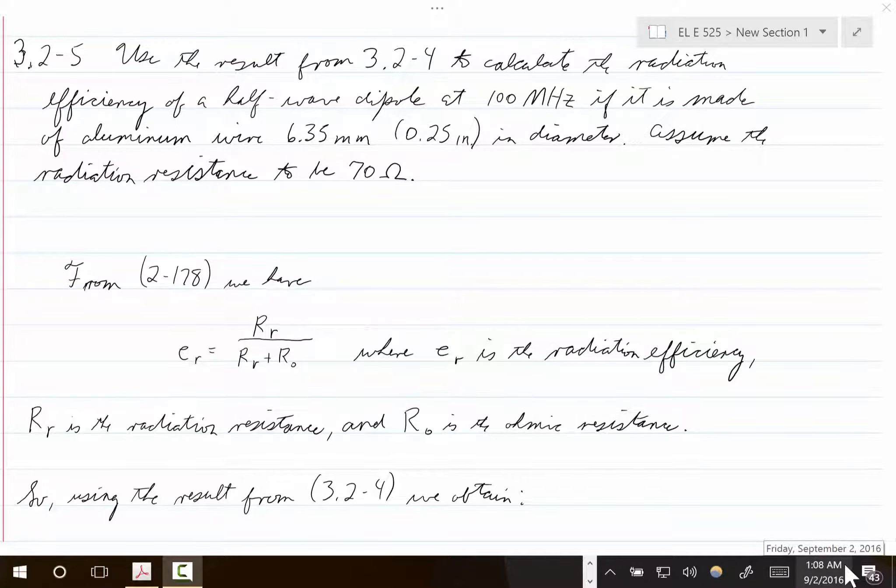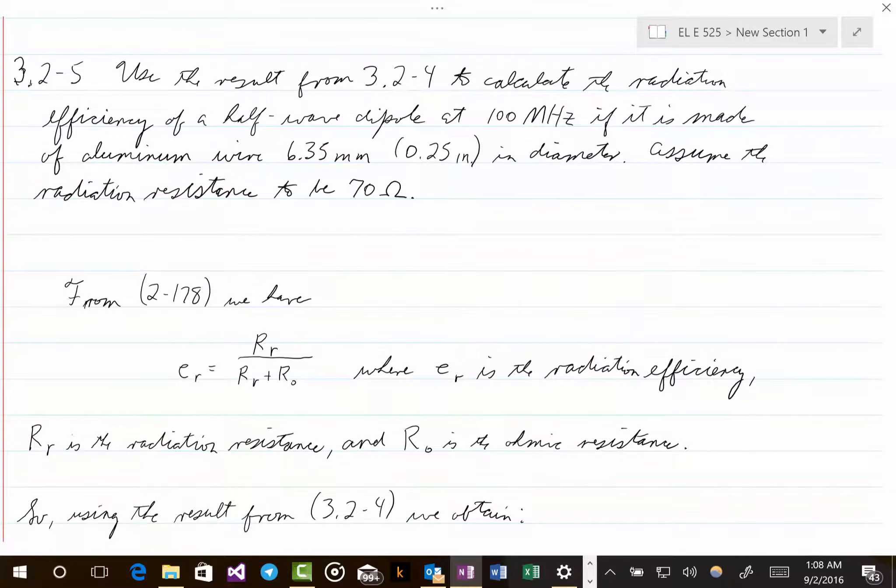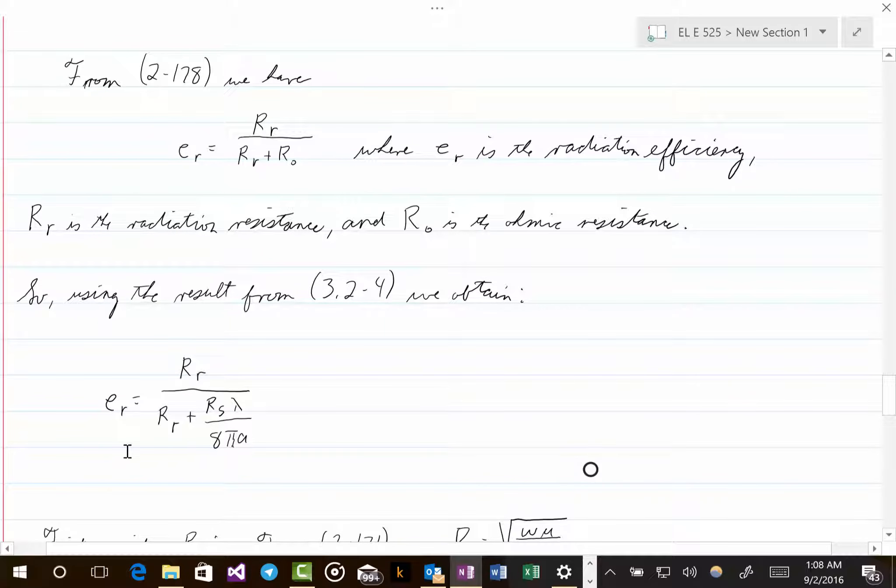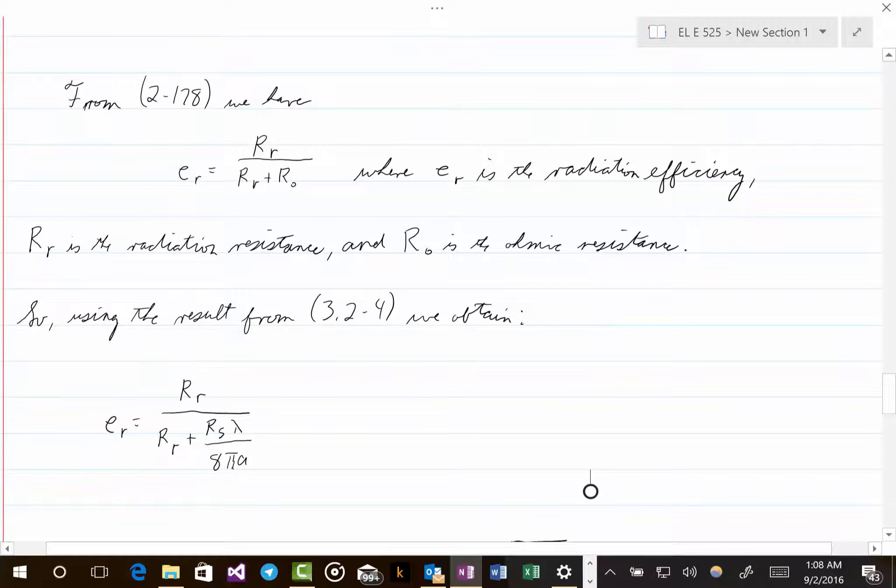So the mistake that was made in working this problem is that that quantity of 6.35 millimeters was used for A. But A, remember, is not the diameter of the dipole. A is the radius of the dipole.